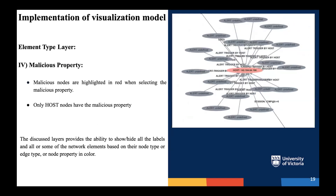The next part of the element type layer is the malicious property. The malicious nodes are computed in the back end and sent to the front end, where they are passed to a function that makes them all red. Malicious nodes are highlighted in red when selecting the malicious property checkbox. Only hosts can be malicious, so the malicious property is only applied to host nodes. In conclusion, the element type layer provides the ability to show and hide all labels and all or some of the network elements based on their node type, edge type, or node property in color.